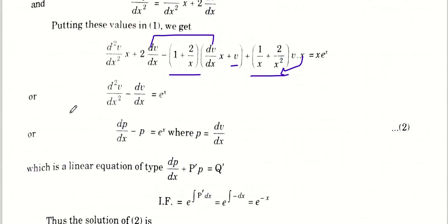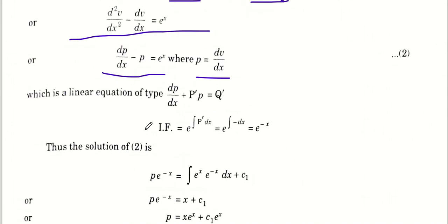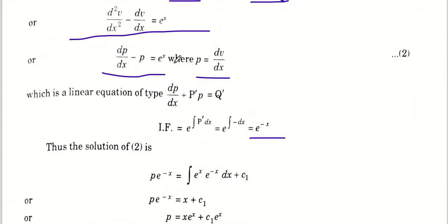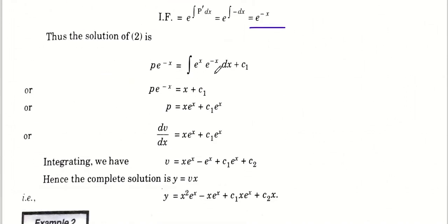Integrating factor निकालेंगे: P का coefficient minus 1 है, integration करने पर e^(−x) आया। अब P × e^(−x) = ∫1 × e^(−x) dx + C। Right side cancel होके 1 बना, 1 का integration x आया। तो P की value आई: x·e^x। P को DV/DX put करके variables separate करके integrate करेंगे।